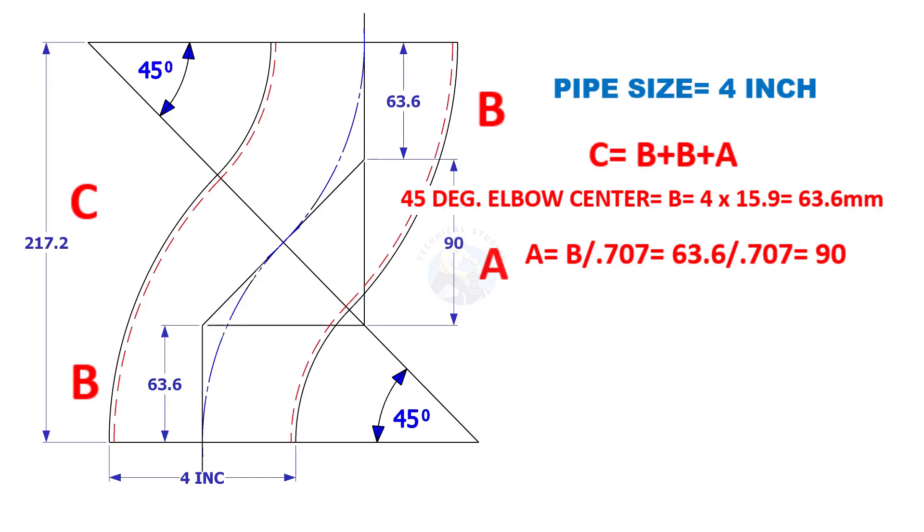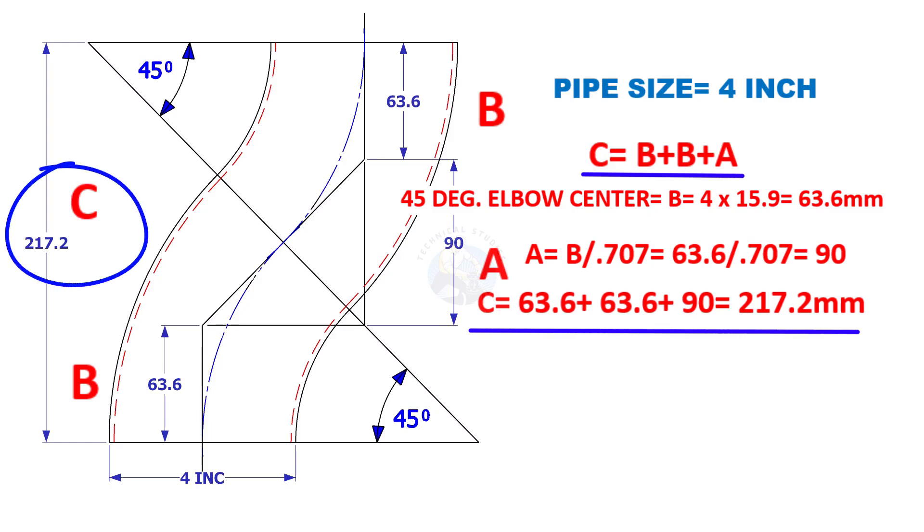The distance of A is B divided by 0.707, which is 90 millimeters. Now B plus B plus A is 217.2 millimeters.